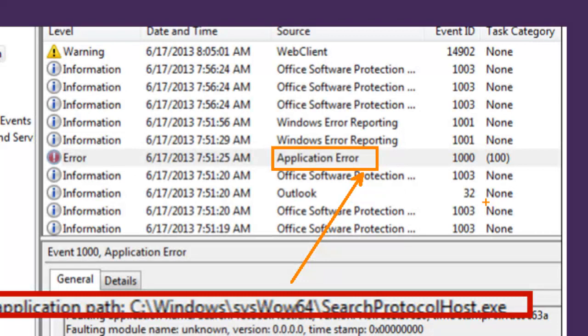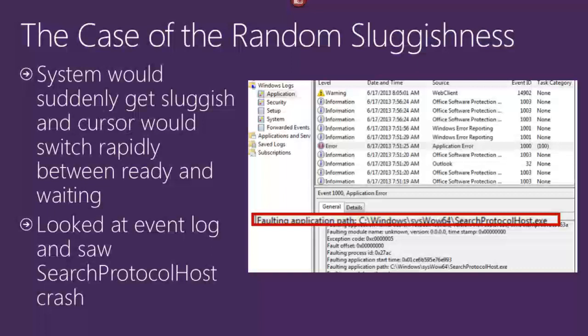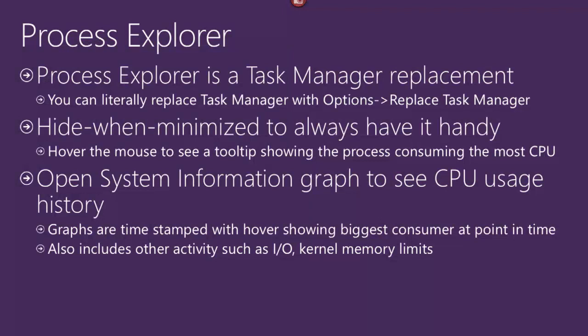Searchprotocolhost is a built-in Windows component that indexes updates to files so desktop search can work. The question was whether this was a problem with Windows itself — meaning you'd have to wait for a Microsoft fix — or whether there was an off chance the bug was triggered by bad configuration, a permissions problem, or a third-party component loaded into the process causing it to go berserk. We needed to look beneath the surface. The tool used was Process Explorer.